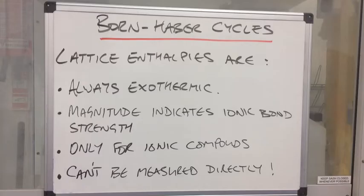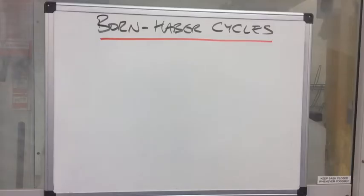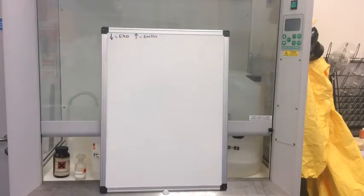Because you can't really have gaseous ions, how do we measure lattice enthalpy? We use Born-Haber cycles. We've seen enthalpy cycles before at AS, where they're used to calculate enthalpy change values for reactions that can't be measured directly — this is just another example of that. So what we'll do now is construct a Born-Haber cycle for sodium chloride, seeing as we've already used that in our example.